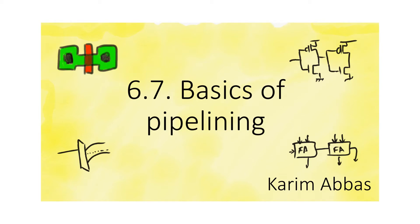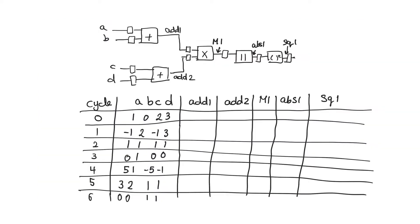The main use for latches is to make registers, and the main use for registers is to create pipelines. This is our first example of a pipeline. We have combinational circuits, and these combinational circuits are separated by registers.